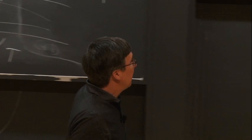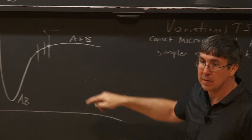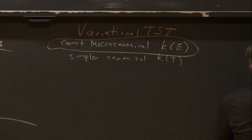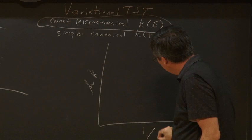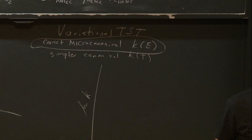You still want to do microcanonical variational TST because you'll need to do a falloff calculation as well. In the high-pressure limit, what do we expect for the Arrhenius plot — log K versus 1/T — for A plus B goes to AB with no barrier? It should be pretty flat, maybe slightly negative in slope. Something like that. That's what people see experimentally, and to get the exact shape you'd have to do a variational calculation.